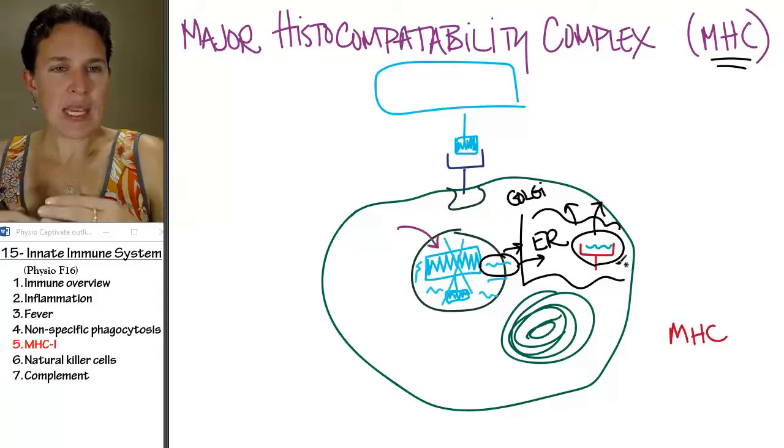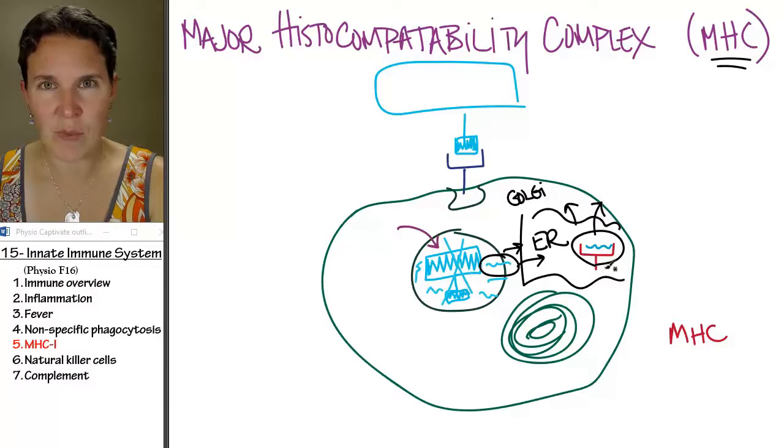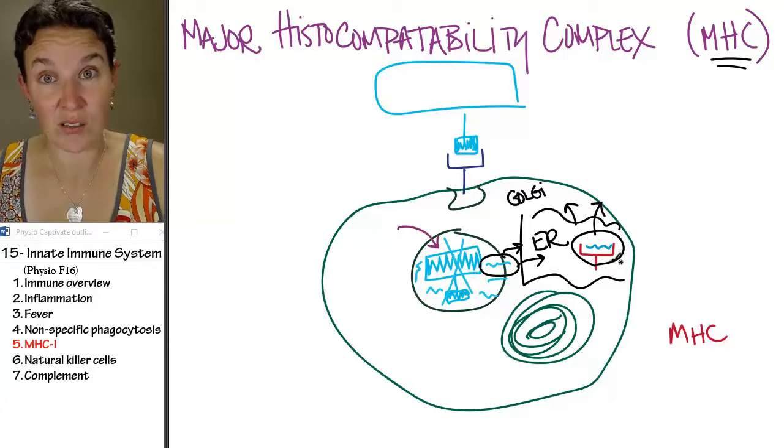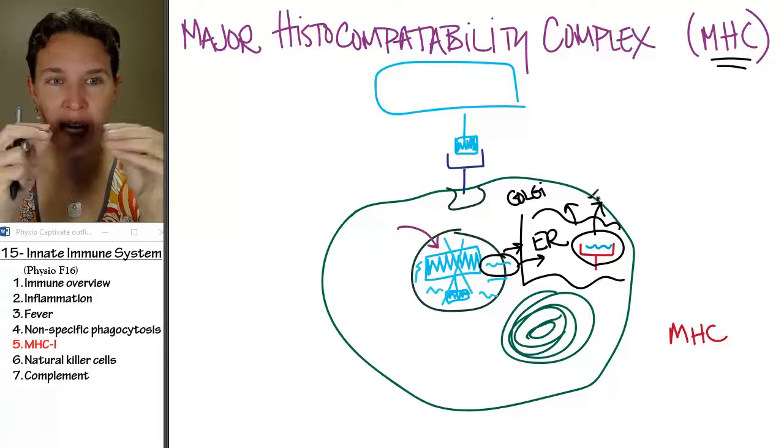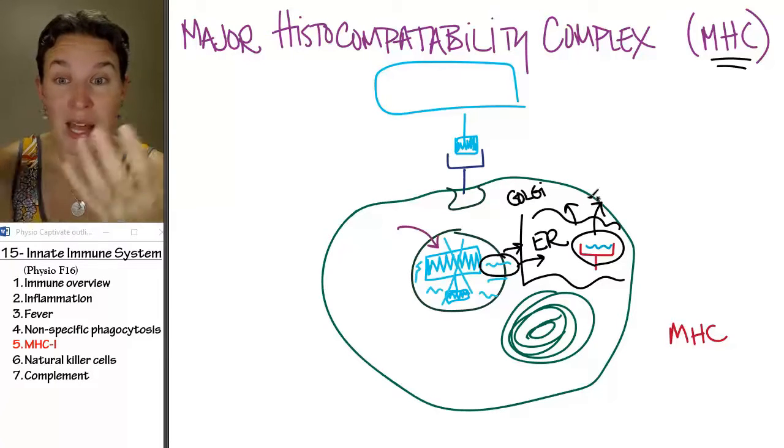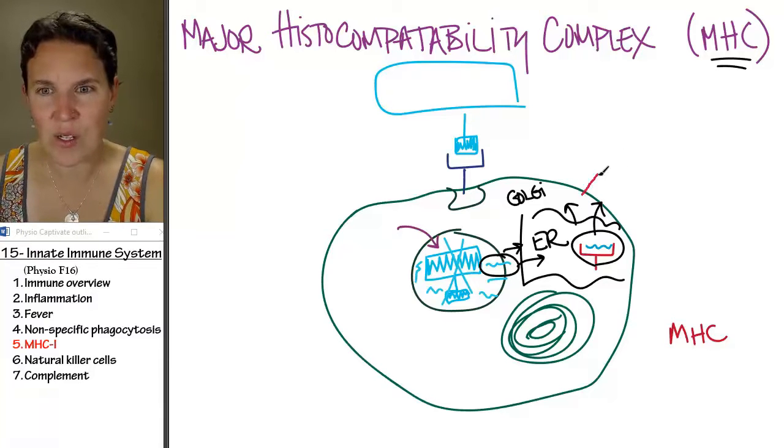And what you're packaging is an MHC platform in a vesicle that then is exocytosed into the cell membrane. And look at how I've drawn the MHC platform in this vesicle. I drew it so that you can see that it's actually embedded in the vesicle so that when you exocytose that thing, when you combine the cell membrane and exocytose it, you're going to have an MHC platform that is now embedded in your cell membrane.